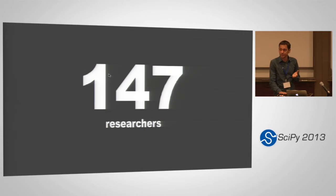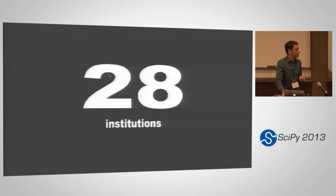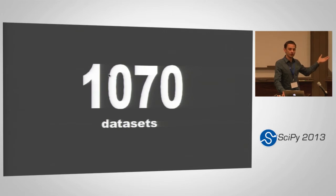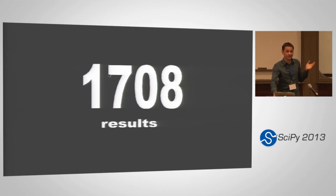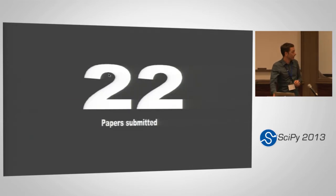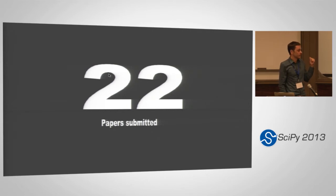This is a pretty large collaboration: 147 researchers spread across 28 different institutions, all working from 1,000 different data sets — each a few hundred patients with anywhere from 500 to a million features. They have generated over 1,700 pieces of results: gene lists, clustering results, normalizations — stuff that goes into downstream analysis beyond the raw data. As of last week, 22 papers have been submitted, with more going in over the next few weeks, and 68 abstracts were written in about a year's worth of work.